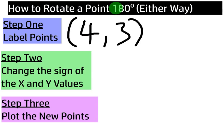Okay, now let's read this step carefully together. Again, this is for rotating a point 180 degrees either way. We're going to change the sign of the x and y values. We're not flipping them like we did with 90 degrees. We're just changing the sign of both of these.